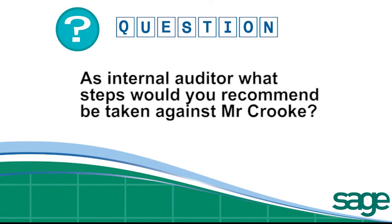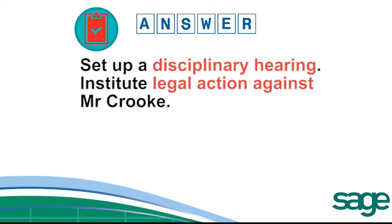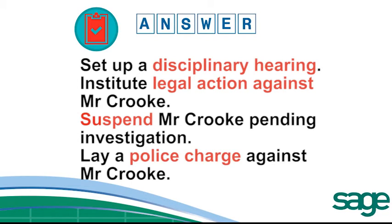As internal auditor, what steps would you recommend be taken against Mr Will Crook? Set up a disciplinary hearing for Mr Crook to answer to the allegations. Institute legal action against him if the costs of the legal action are likely to be less than the amount recoverable. Suspend Mr Crook pending the investigation or move him to another department. Lay a charge against Mr Crook at the police station and get a case number.